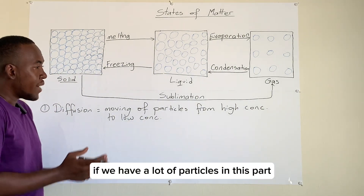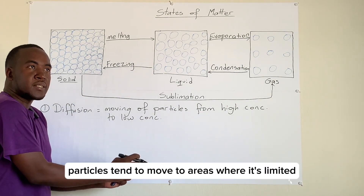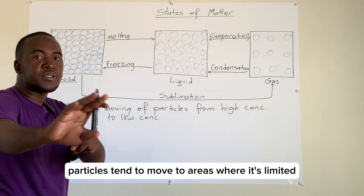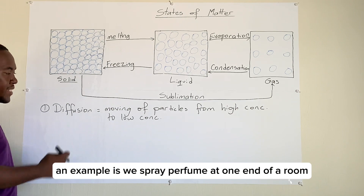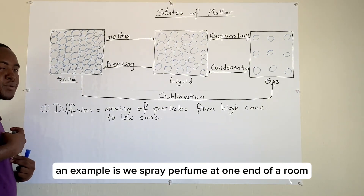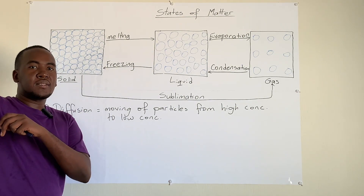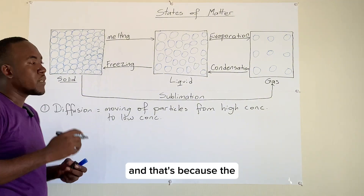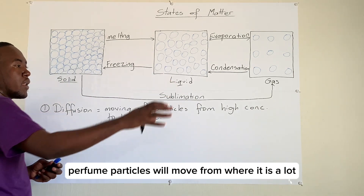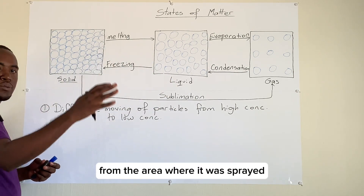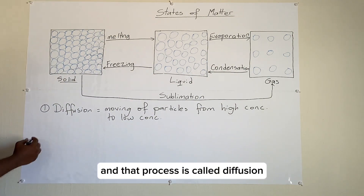What diffusion means is, if we have a lot of particles in one area, those particles tend to move to areas where concentration is limited. An example is when we spray perfume at one end of a room and persons at the opposite end start to smell that fragrance. That's because the perfume particles move from the area where there is a lot — where it was sprayed — into the area where there was not. That process is called diffusion.